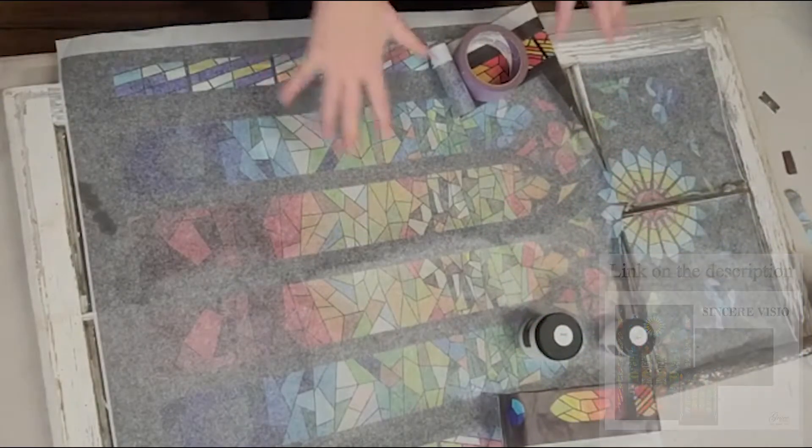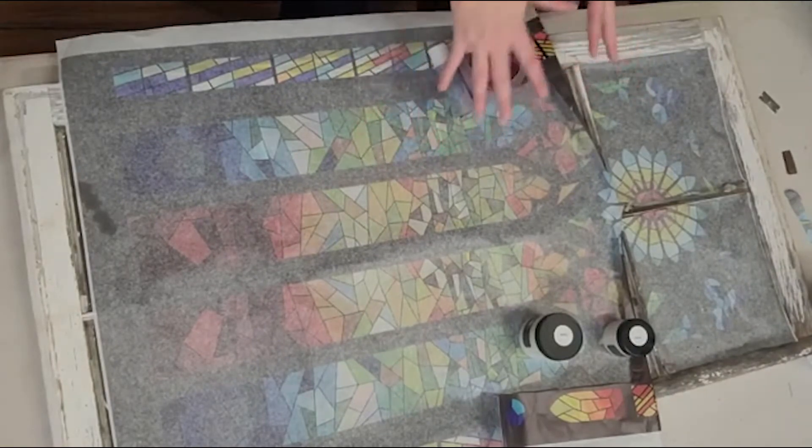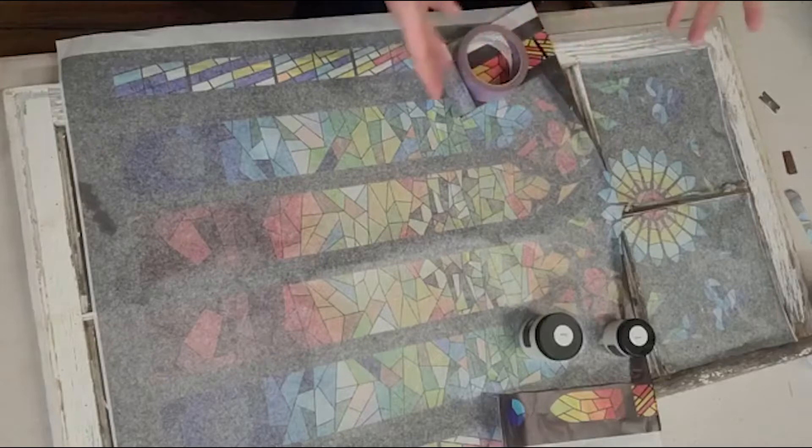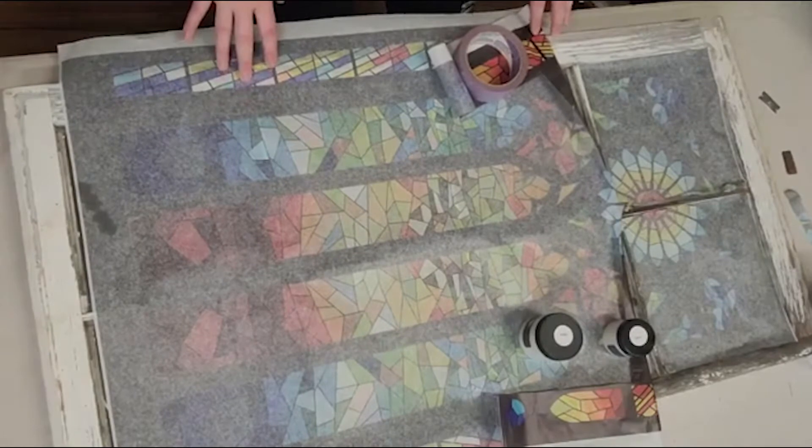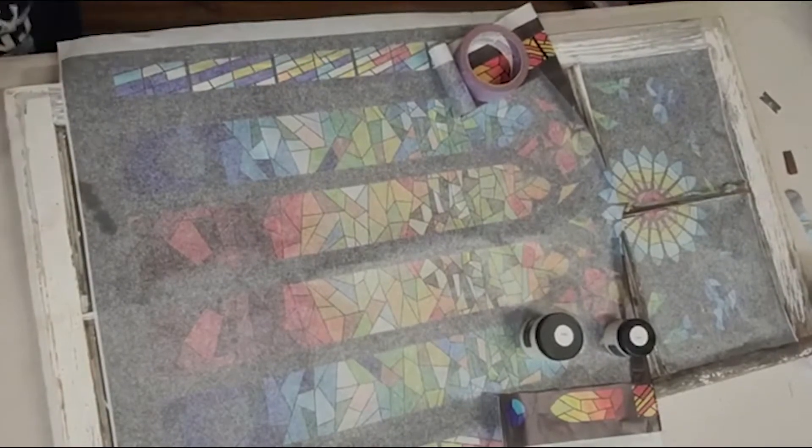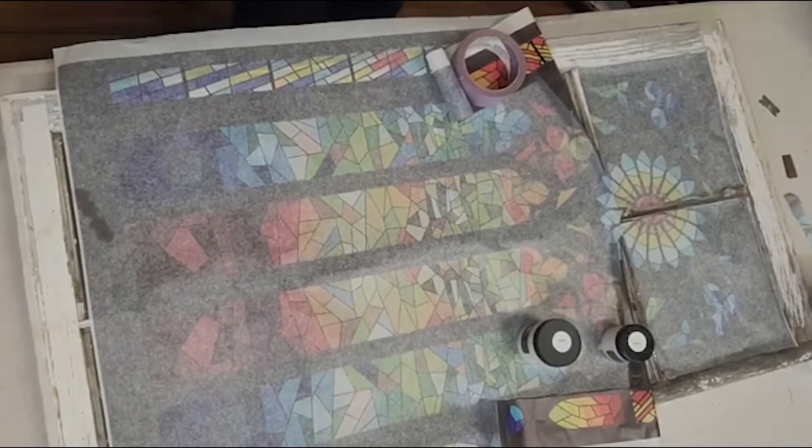I'm super pumped. We have our decoupage paper which is Grace on Design and the paper we're going to be using today is called Sincere Vision. So we have Sincere Vision which is this decoupage paper and it is a paper of a stained glass. What I did is I found this old, old, old window. My husband brought it here. It is chippy, it is old, it is cool and we're going to make it look like a stained glass window.